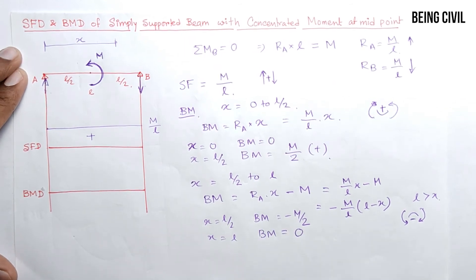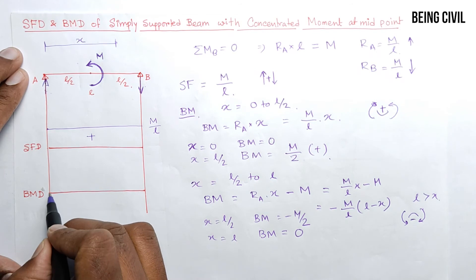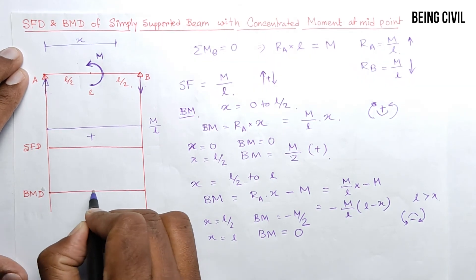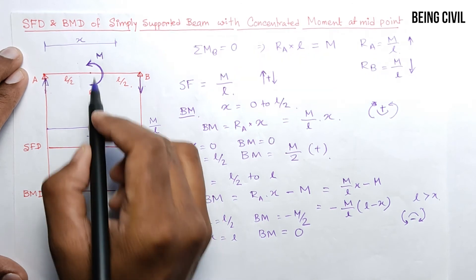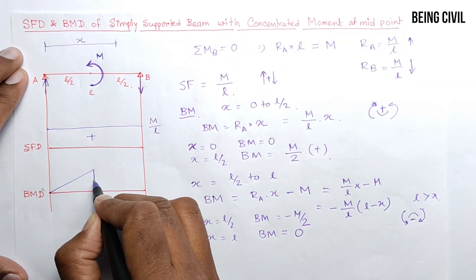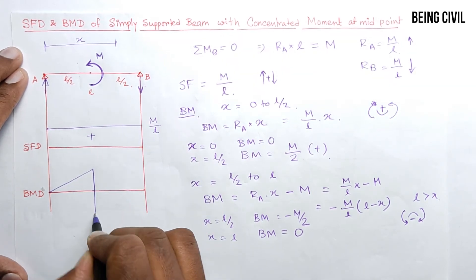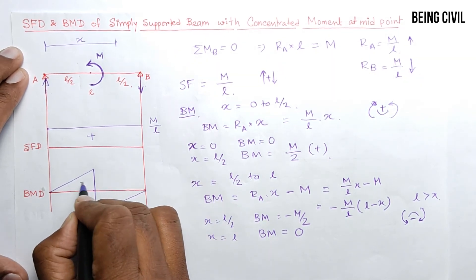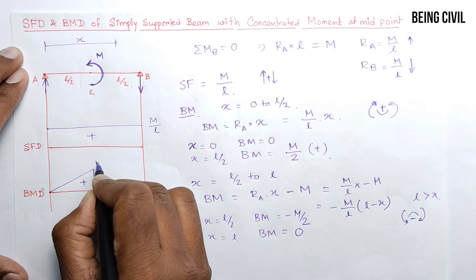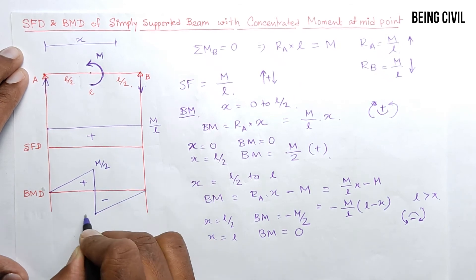So the bending moment will be - at here it is 0, at midpoint is plus M/2, and for this moment it changes its sign to minus M/2 here and again 0 at the end. So it is positive and it is negative. It is M/2 positive and it is M/2 negative.